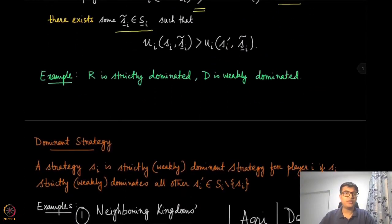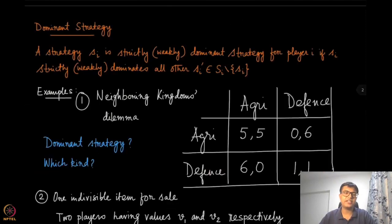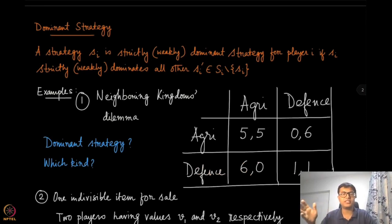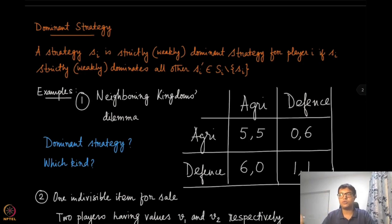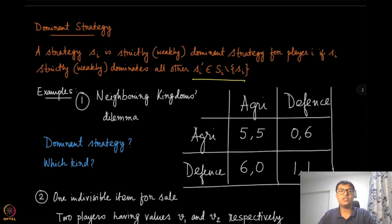Now that we have discussed dominated strategy, it is the right time to discuss dominant strategy — the direction essentially changes. A dominated strategy is one that is dominated by some other strategy. A dominant strategy is one that dominates all other strategies. A strategy Si is a strictly or weakly dominant strategy for player i if Si strictly or weakly dominates all other strategies Si prime. Let us look at examples to find what the dominant strategies are.